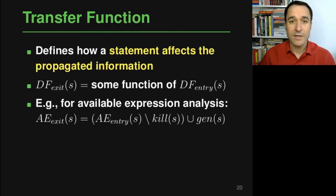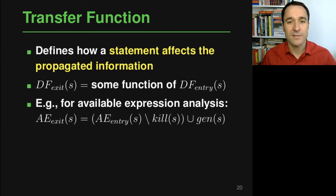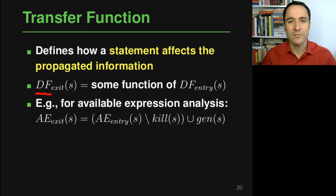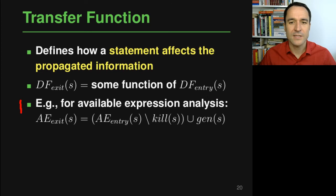Property number three is the transfer function. What the transfer function does is define how a statement affects the information propagated by the analysis, written as an equation that tells us the state of the analysis at the exit of a statement s given what we know at the beginning of the statement. In general, the transfer function tells us df_exit(s) as some function of df_entry(s).